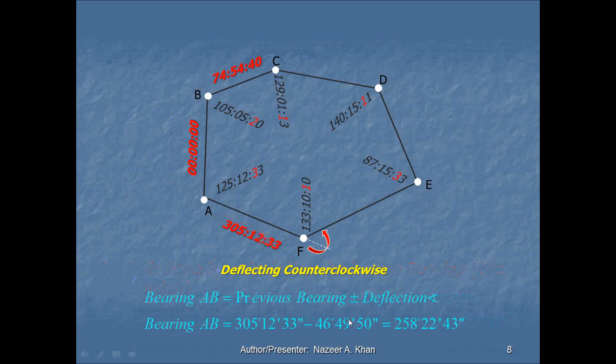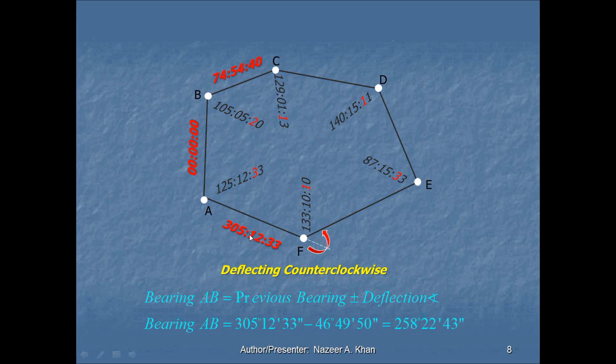Let's go and do one deflection counterclockwise. As we could see in this case, we have a bearing of AF, and that is 305 degrees 12 minutes 33 seconds. And we're going to go and find the bearing of FE. We are now deflecting counterclockwise, as the arrow is showing counterclockwise. The calculation of the deflection angle is still the same, 180 minus 133 degrees 10 minutes 10 seconds, and that would give us a deflection angle of 46 degrees 49 minutes 50 seconds. However, it is a negative deflection angle. Therefore, when we algebraically add it to 305 degrees 12 minutes 33 seconds, we are technically subtracting it from that. So, therefore, we're going to end up with a bearing of 258 degrees 22 minutes 43 seconds. And that's how you calculate full circle bearing.